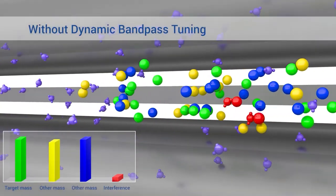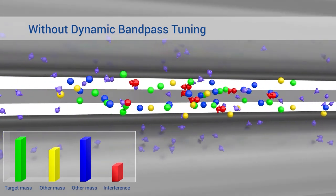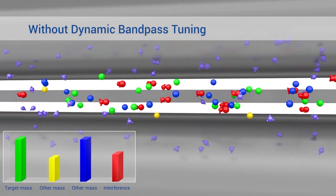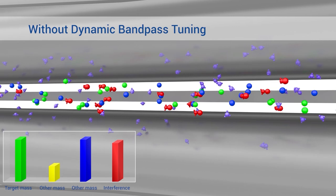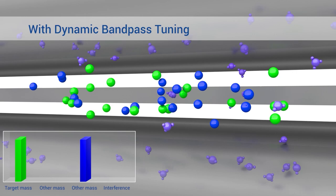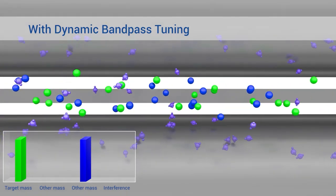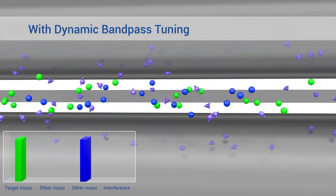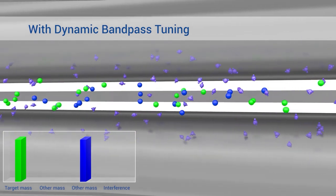The universal cell leverages dynamic bandpass tuning as an additional mass filter, a feature exclusive to quadrupole cells. This eliminates reaction byproducts before they form new interferences, for superior interference removal and lower detection limits.